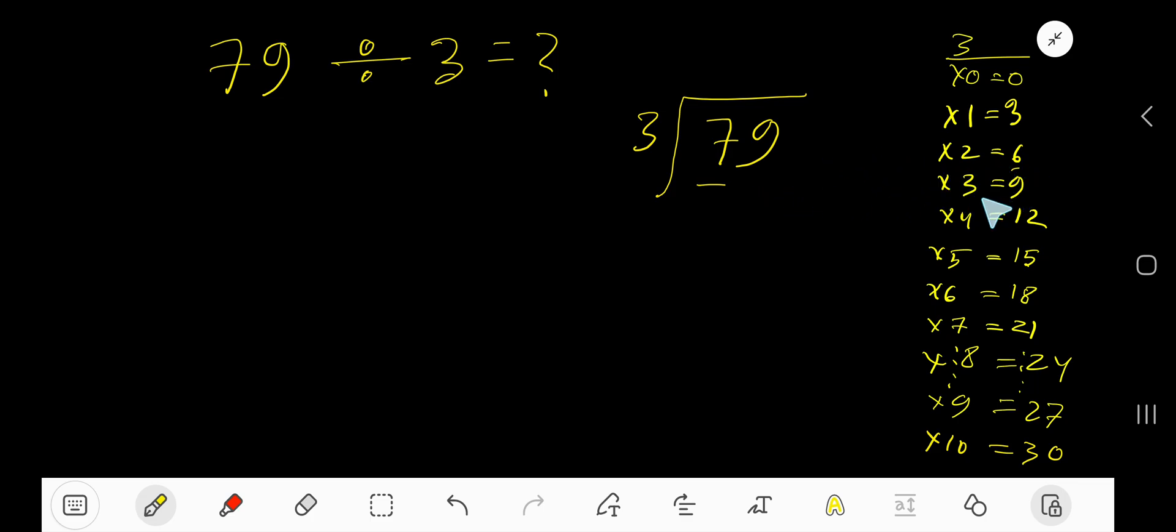3 goes into 7 how many times? 3 times 3 is 9, which is greater, so 2 times. 2 times 3 is 6. Subtract, then bring down this digit 9 to get 19. 3 goes into 19 how many times? 7 times is 21, so 6 times. 6 times 3 is 18. Subtract 1. So our answer is 26 remainder 1.